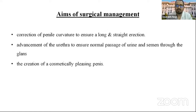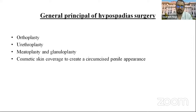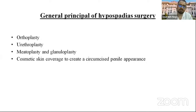Aims of surgical management include: correction of penile curvature to ensure a long and straight erection; advancement of the urethra to ensure normal passage of urine and semen through the glans; and creation of a cosmetically pleasing penis. The general principles of hypospadias surgery are: orthoplasty (correction of curvature), followed by urethroplasty, then meatoplasty and glanuloplasty, and finally cosmetic skin coverage to create a circumcised penile appearance.